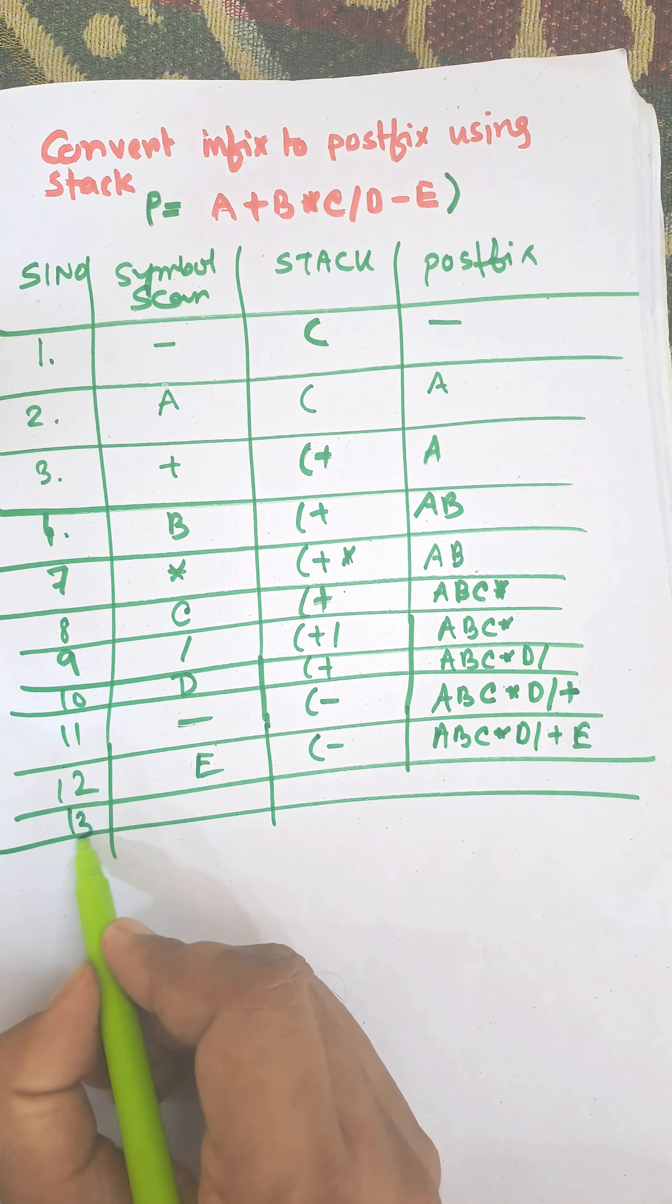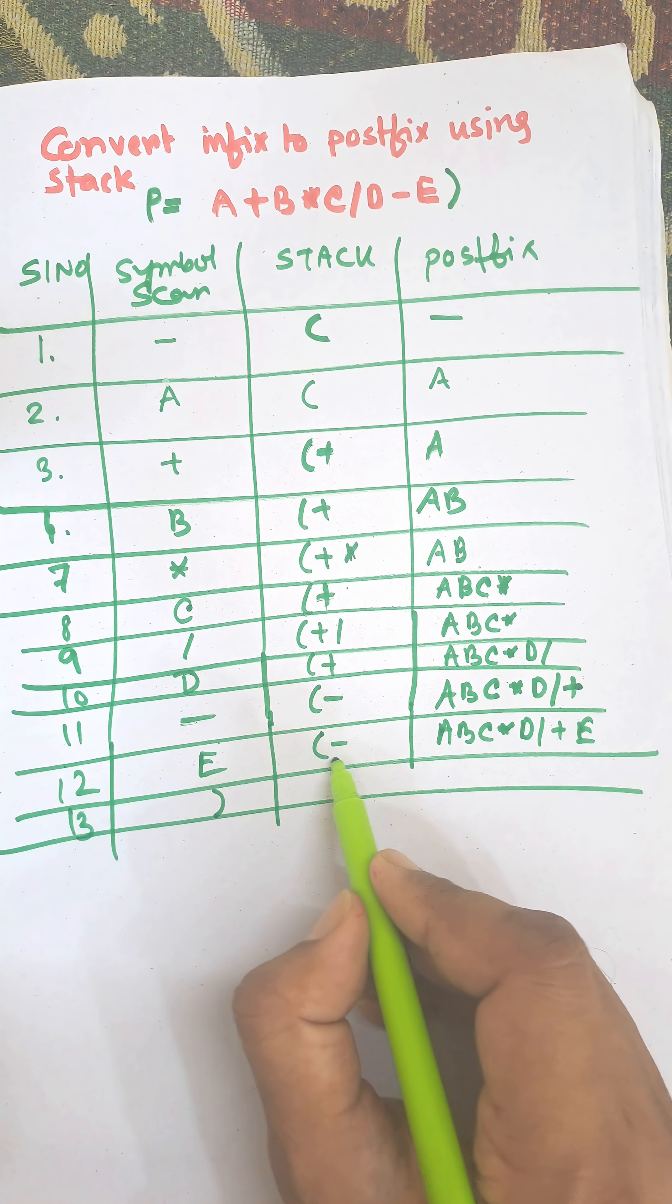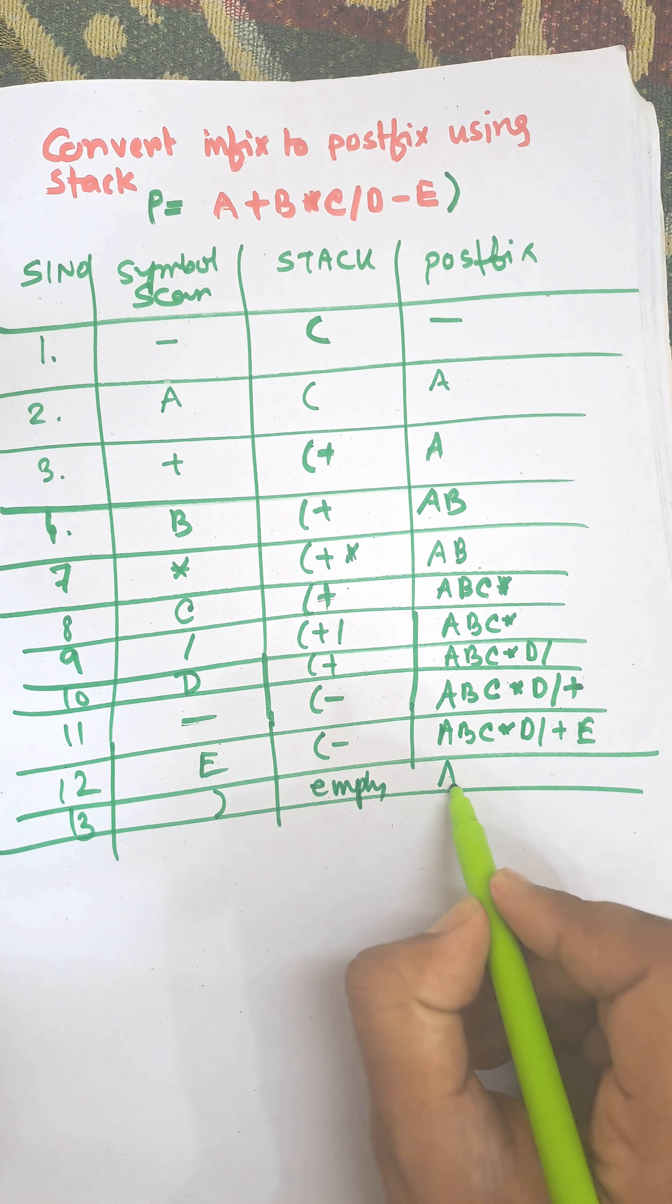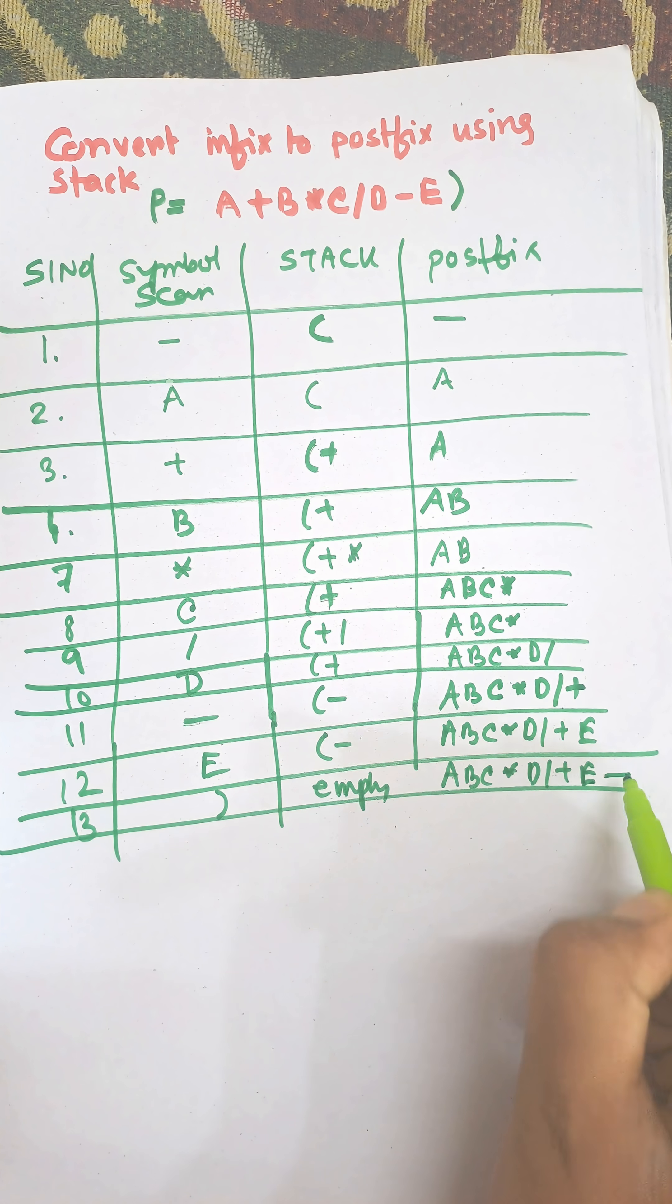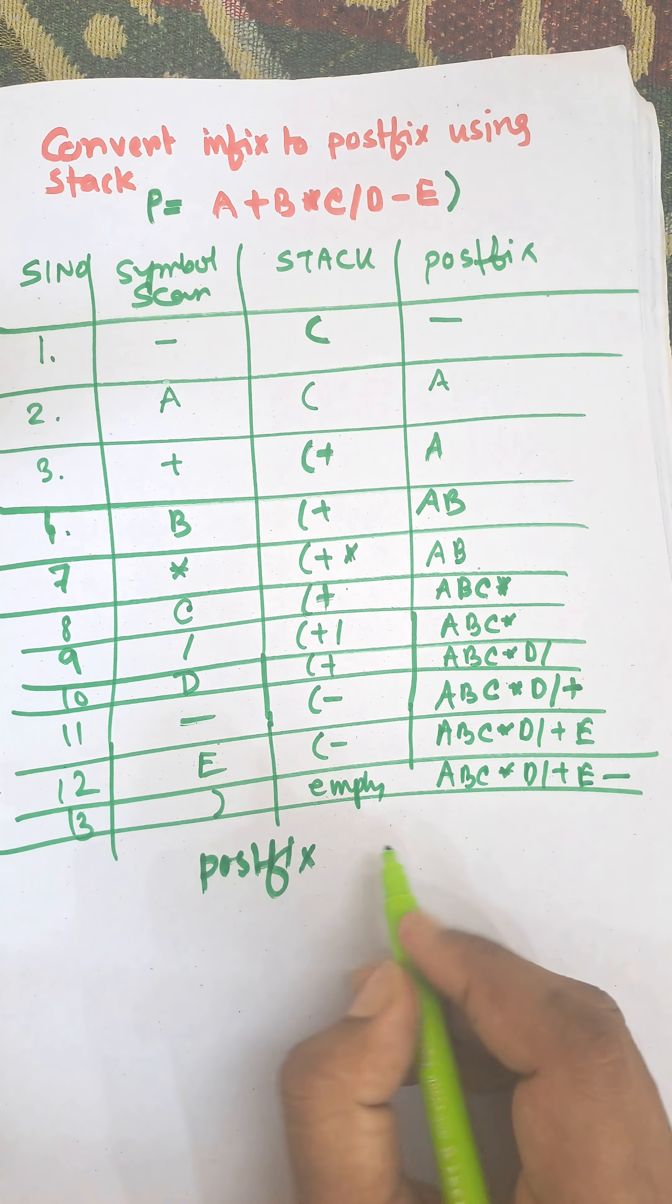Then the last operation, the closing bracket, will pop the remaining operators and opening bracket, so the stack will be empty and the answer will be A B C multiply D division plus E minus. This is the postfix expression of the given infix.